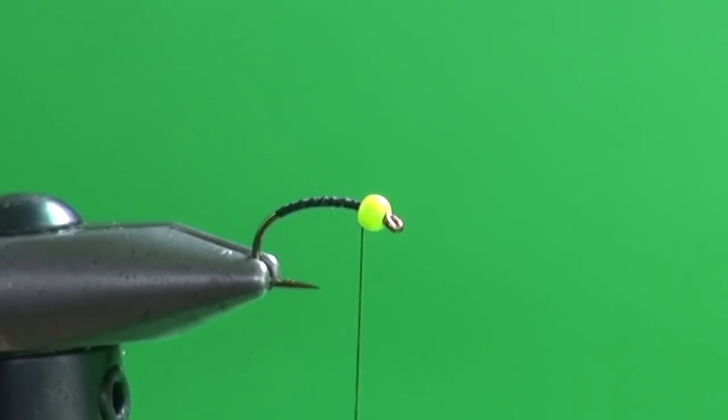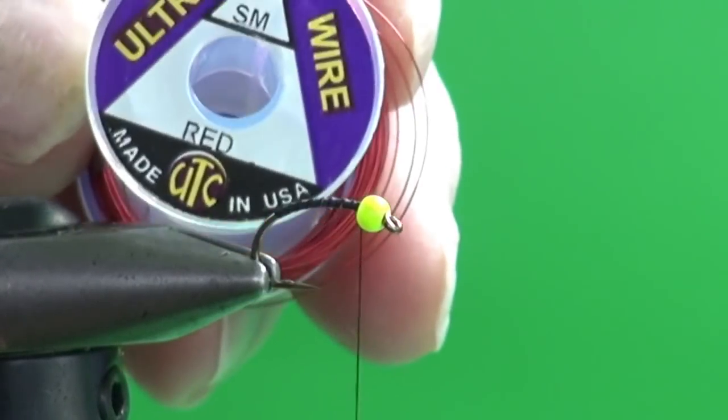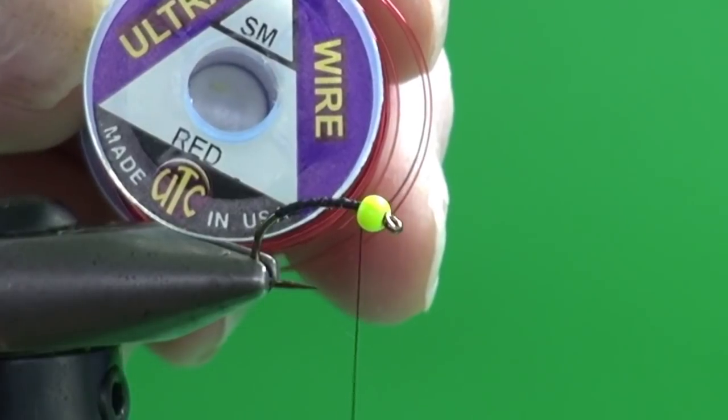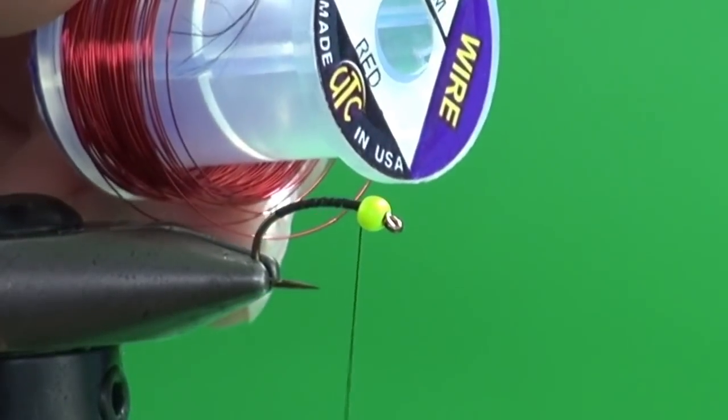For the rib, as the name says, black and red, so we're going to use some small UTC red wire. This never happens to anybody at home, right? The exploding spools. So we've just taken a length off of that.